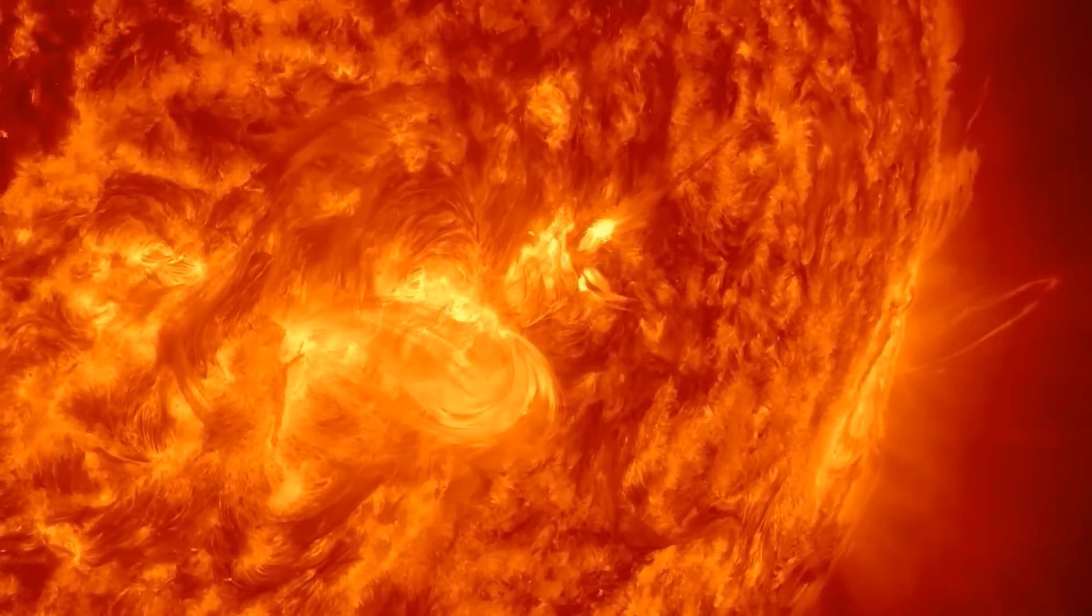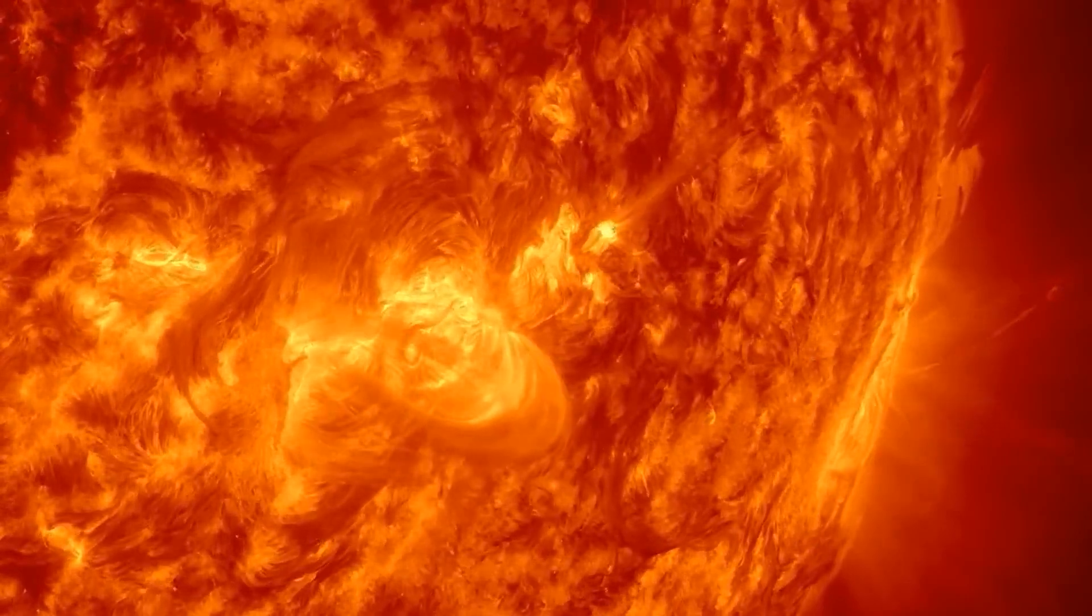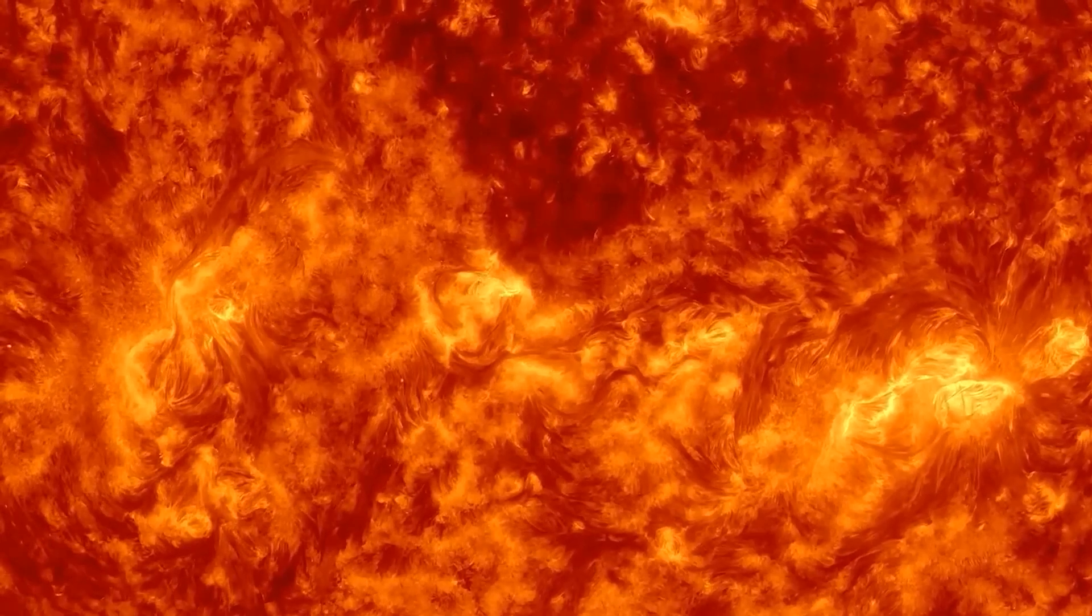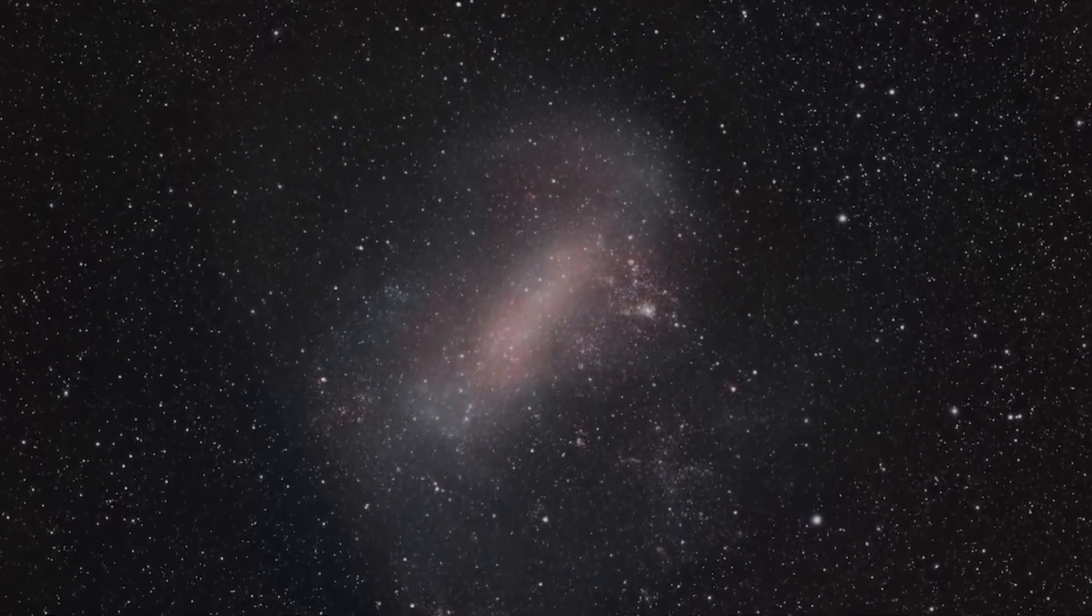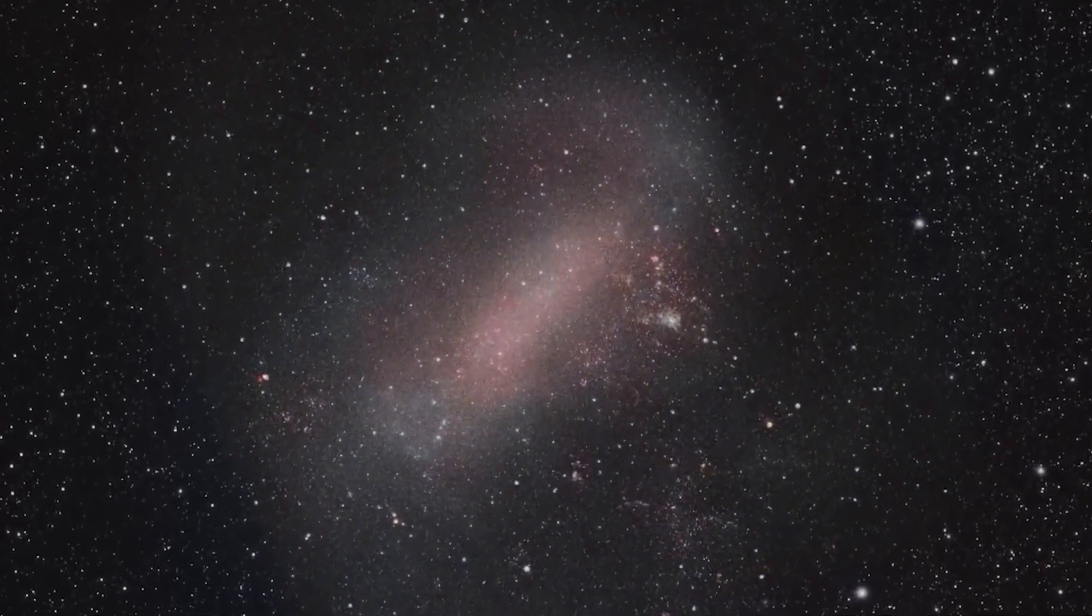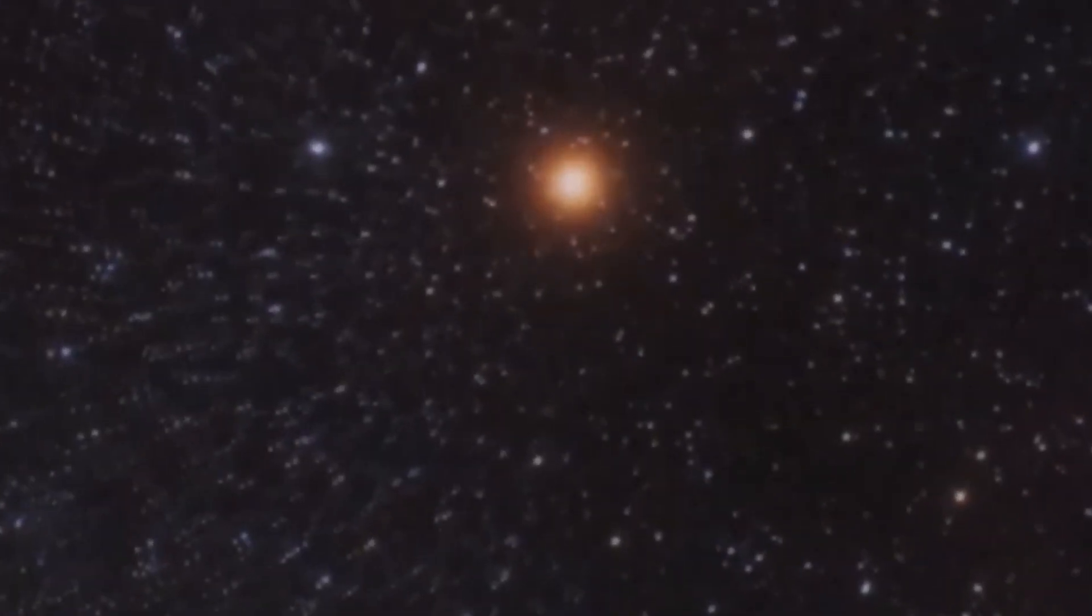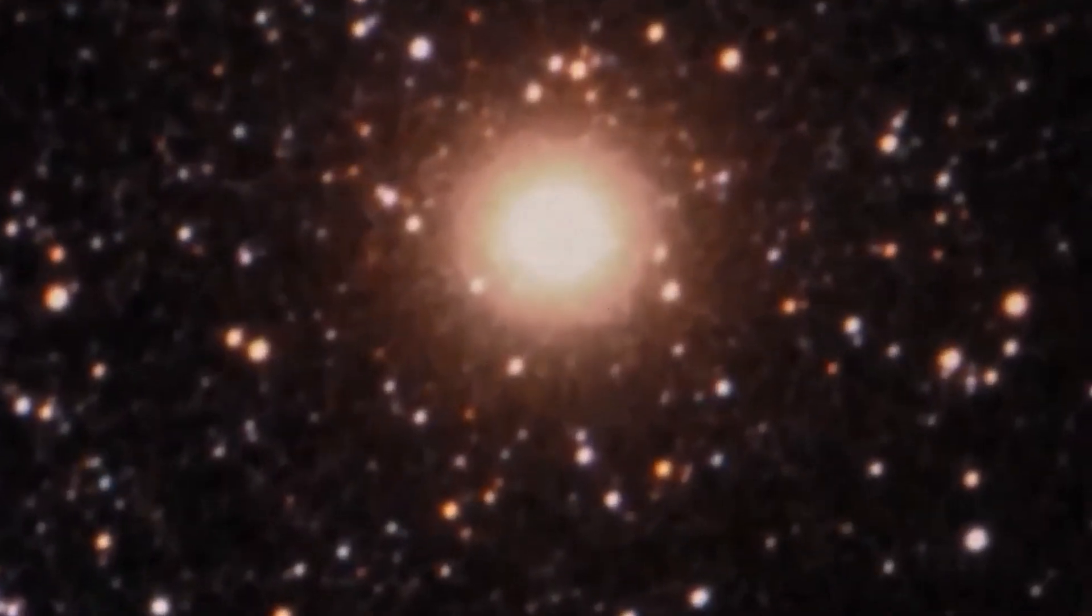When compared to previous supernova events, Betelgeuse's potential supernova is unique due to its proximity to Earth and the star's prominence in our sky. Most supernovae we've observed were in distant galaxies, their light taking millions of years to reach us. The Crab Nebula, for instance, resulted from a supernova event witnessed in 1054 AD, but the explosion occurred about 6,500 light-years away.